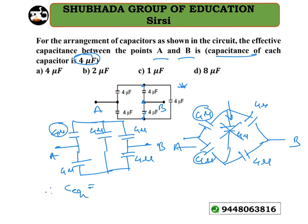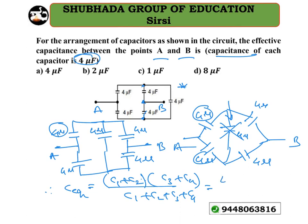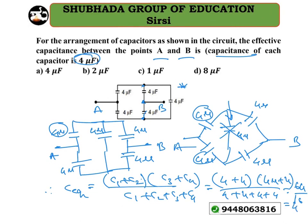When the bridge is balanced, there is no current flow through the middle branch, so that branch is not considered. Using the formula C_eq = (C1 + C2)(C3 + C4) / (C1 + C2 + C3 + C4) = (4 + 4)(4 + 4) / (4 + 4 + 4 + 4) = 64/16 = 4 microfarads. So option A is the right answer.